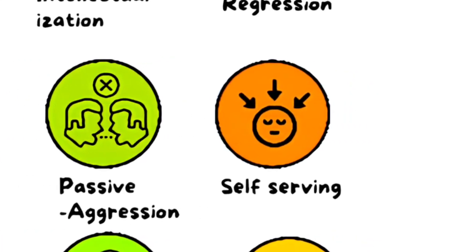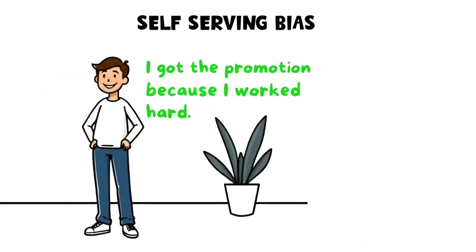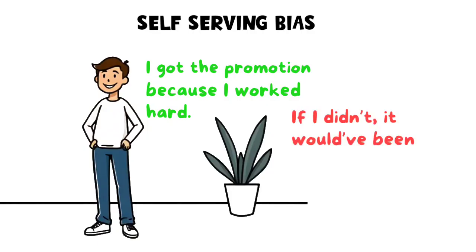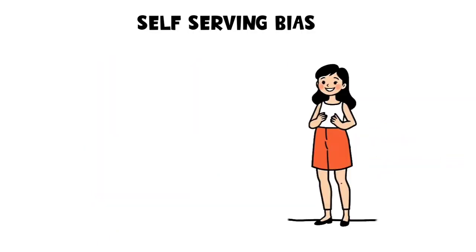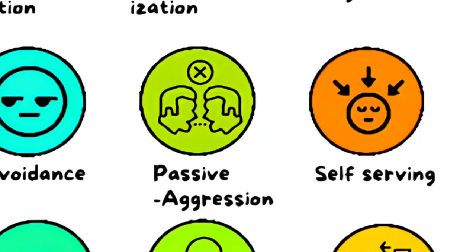Self-serving bias. This defense mechanism allows people to attribute successes to their own abilities while blaming external factors for failures. It preserves self-esteem by avoiding personal responsibility.